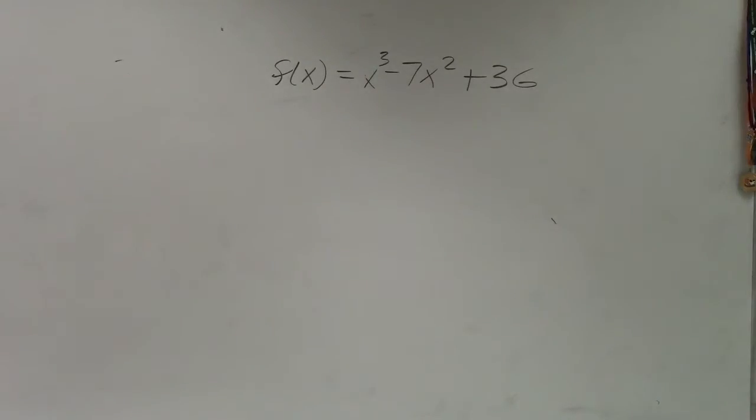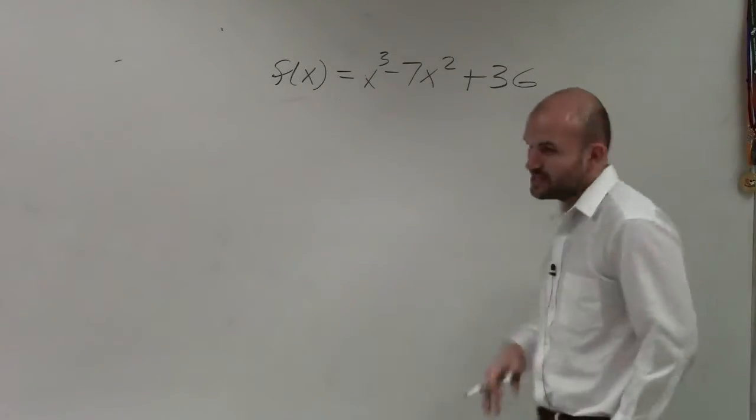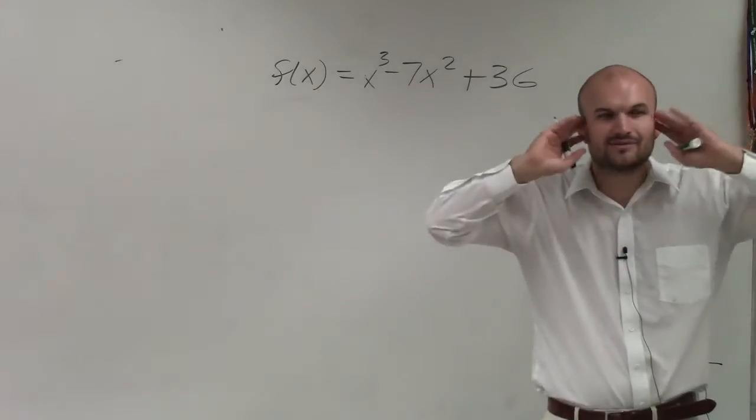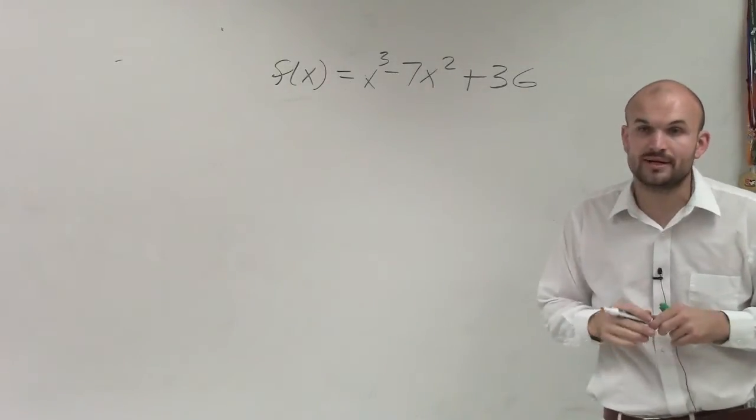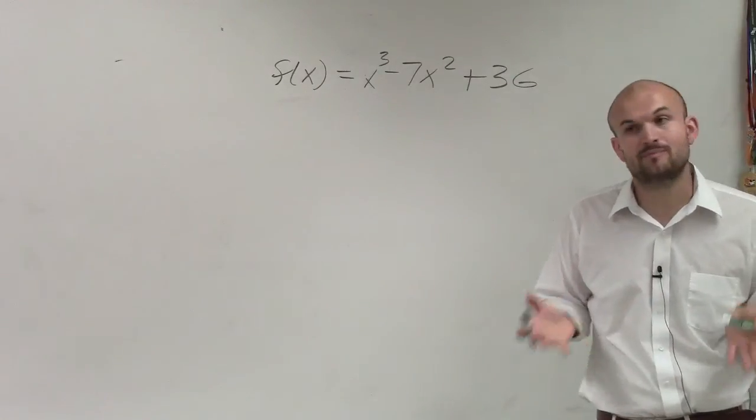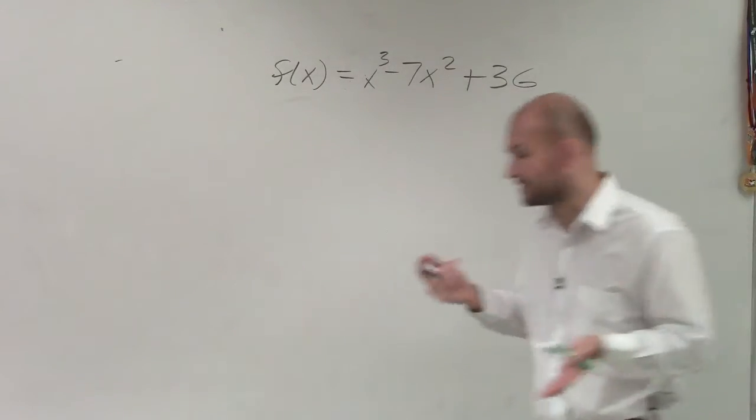The next thing is, so we talked about how to find the rational zeros. Oh, I didn't write them. Somebody wrote those down, right? I'll go back up there. All right, so now let's go and determine the number of possible real positive and negative zeros.